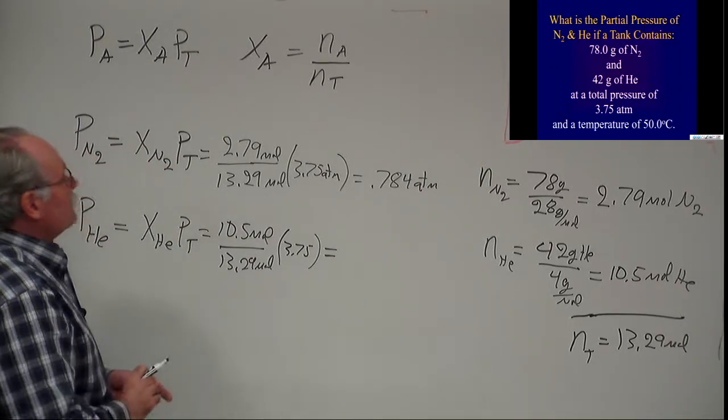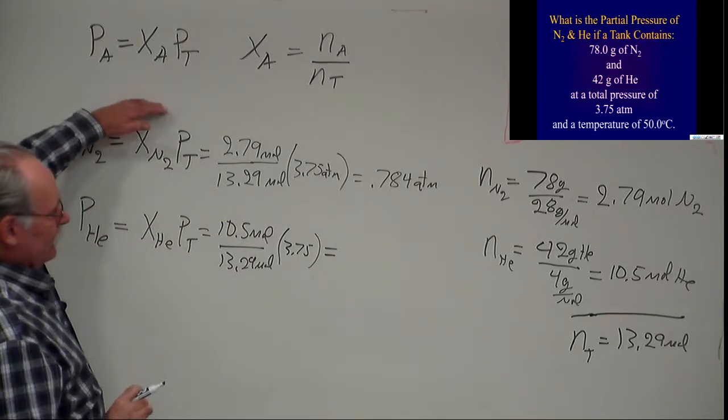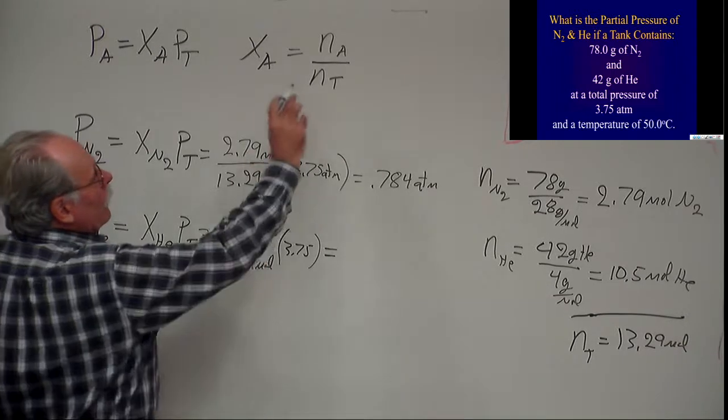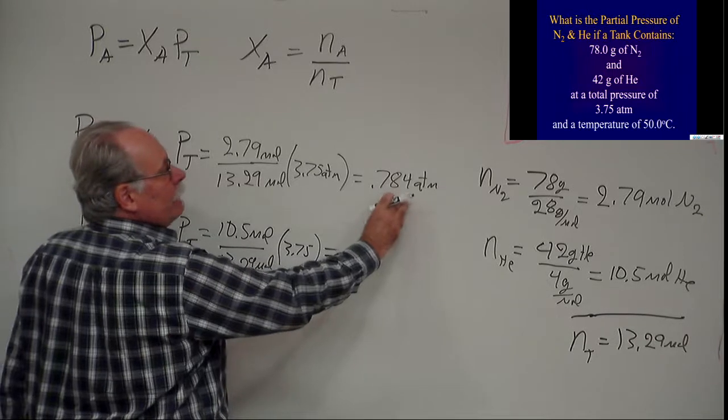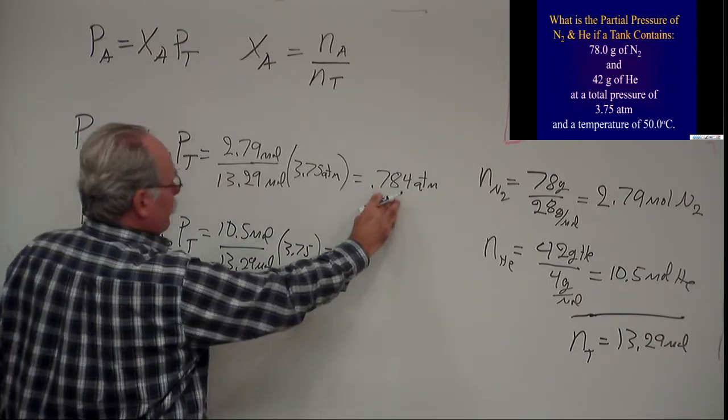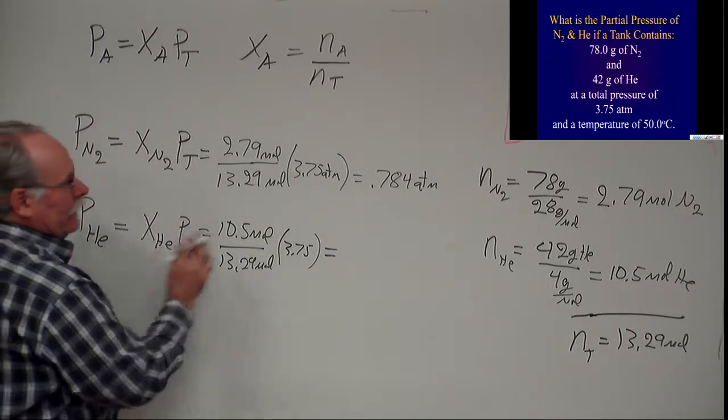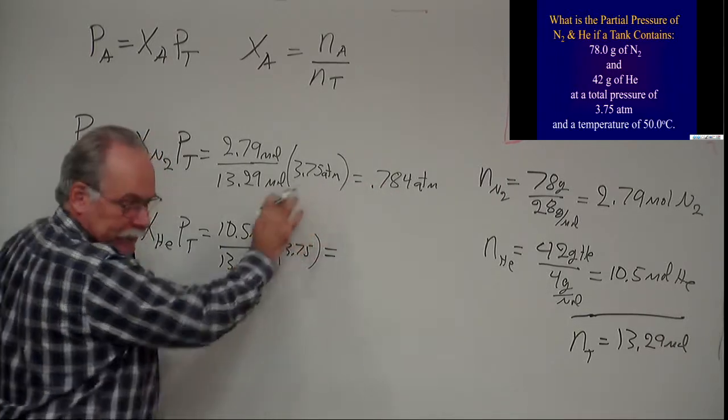But the sum of the partial pressures equals the total pressure, so if the total pressure is 3.75 and 0.784 was due to nitrogen, the rest must be due to helium. I could have just taken this number and subtracted it.